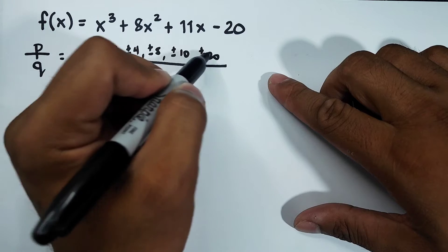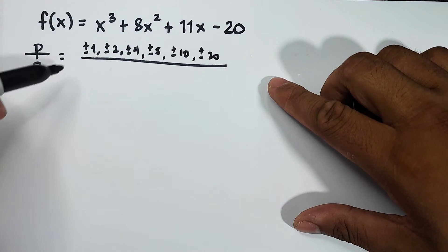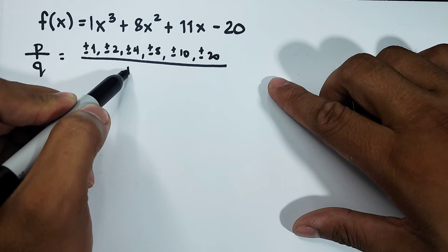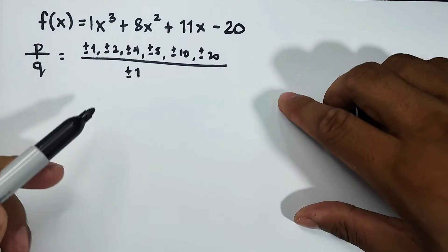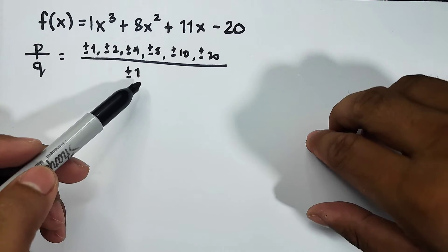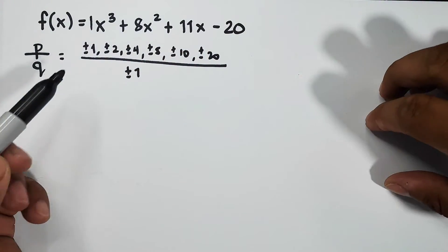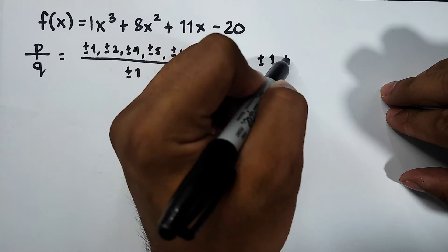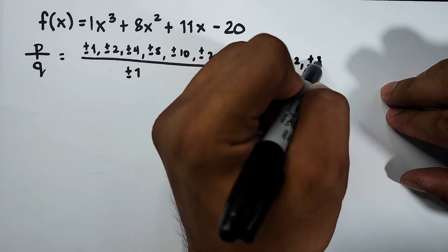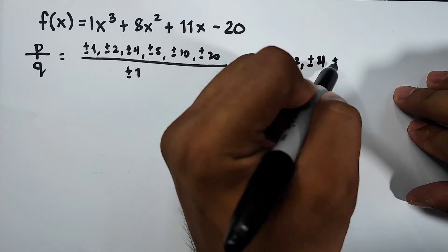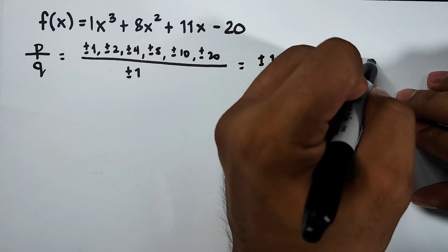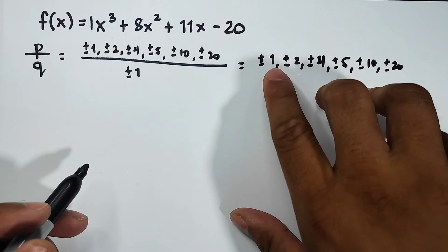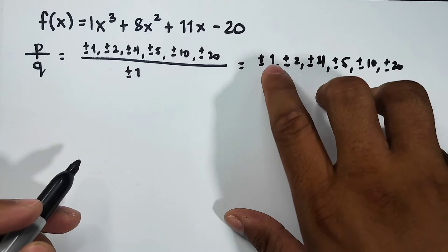Meanwhile, q is the coefficient of the leading term, which is 1, so that is simply ±1. If we get the quotient of these possible factors of the constant and the leading coefficient, it will lead us to ±1, ±2, ±4, ±5, ±10, and ±20. These numbers, we will try if we can get them as zeros by evaluating this function.